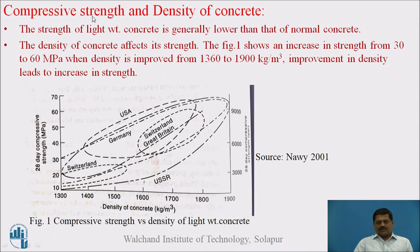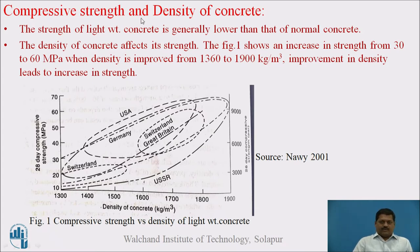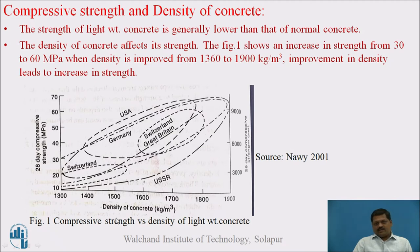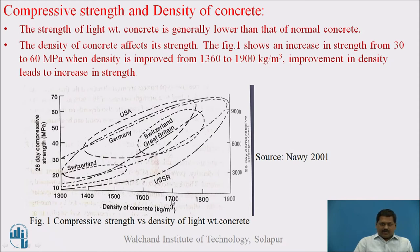Let us see the first property: compressive strength and density of the concrete. This is the basic relationship in concrete — the relationship between compressive strength and density. As density improves, the strength of the concrete will improve. In case of Lightweight Concrete, generally the strength is lower than that of normal concrete. The graph plots compressive strength versus density of the concrete. The density of concrete affects its strength. This figure shows an increase in strength from 30 to 60 MPa when the density is improved from 1,360 to 1,900 kg per meter cube.